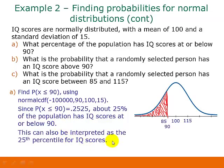If you remember when we talked about percentiles back in Chapter 3, this could also be interpreted as the 25th percentile for IQ scores, because about 25% of the population has a score of 90 or lower.